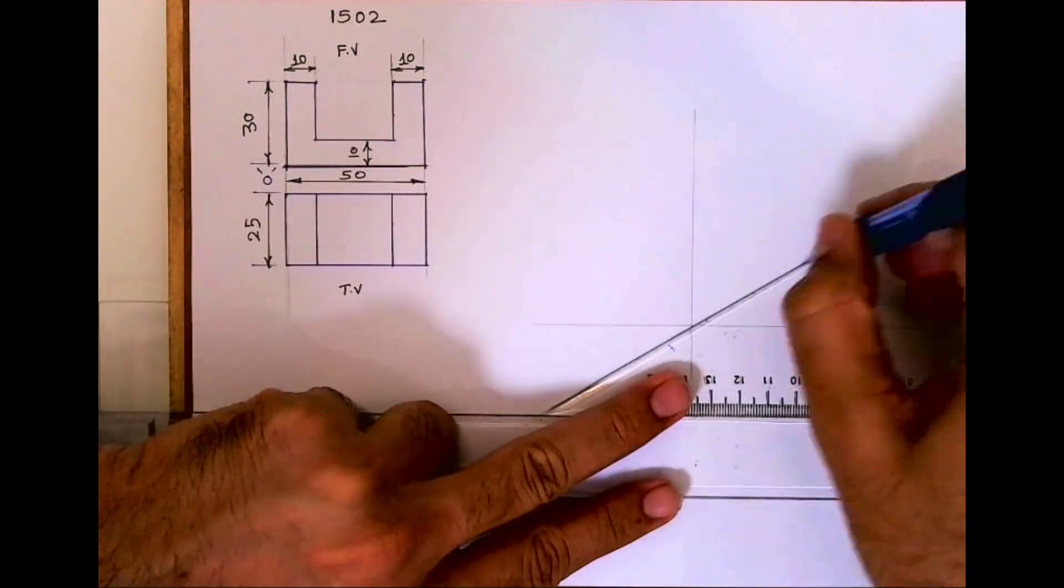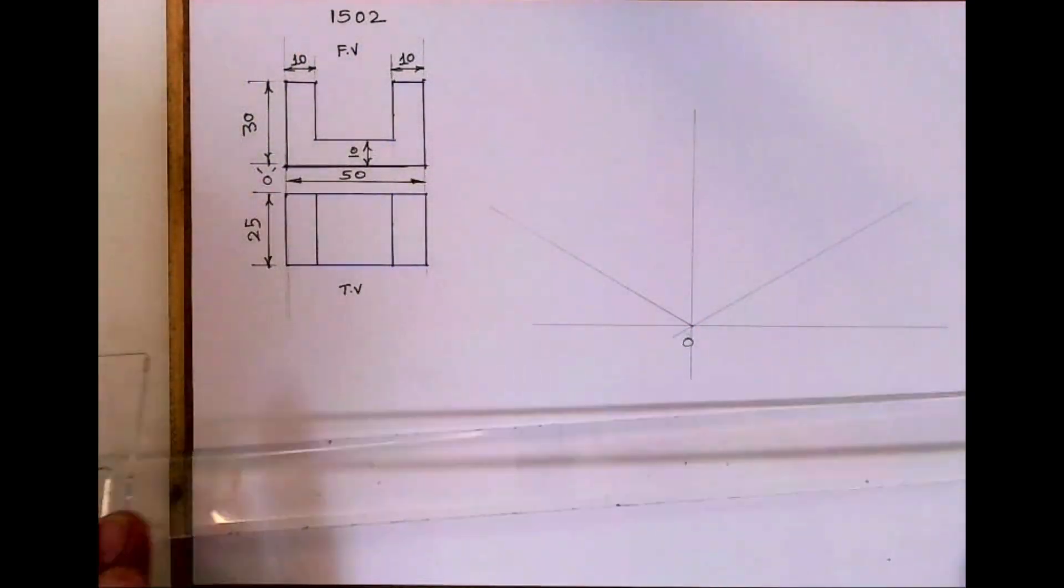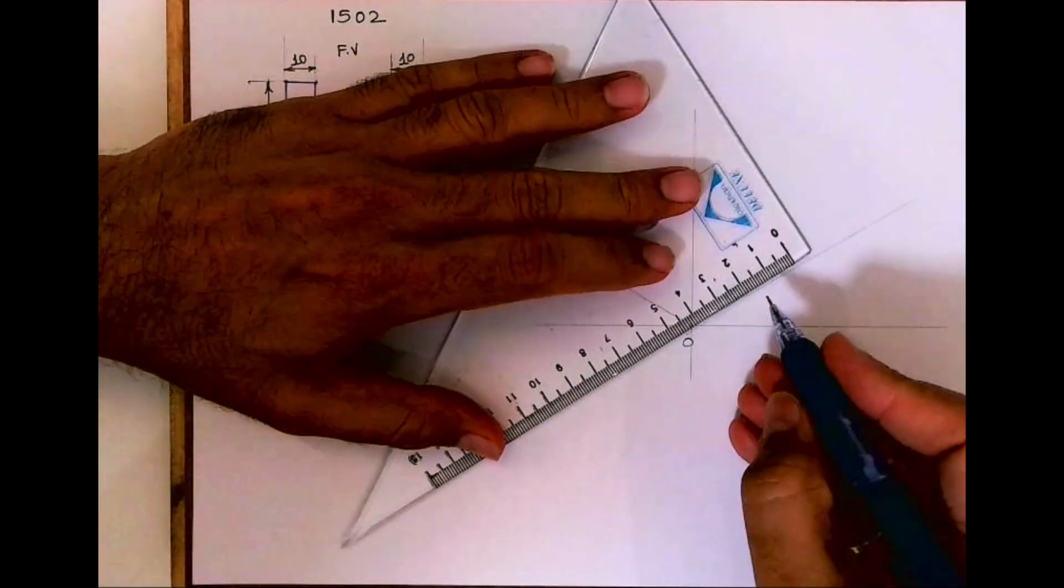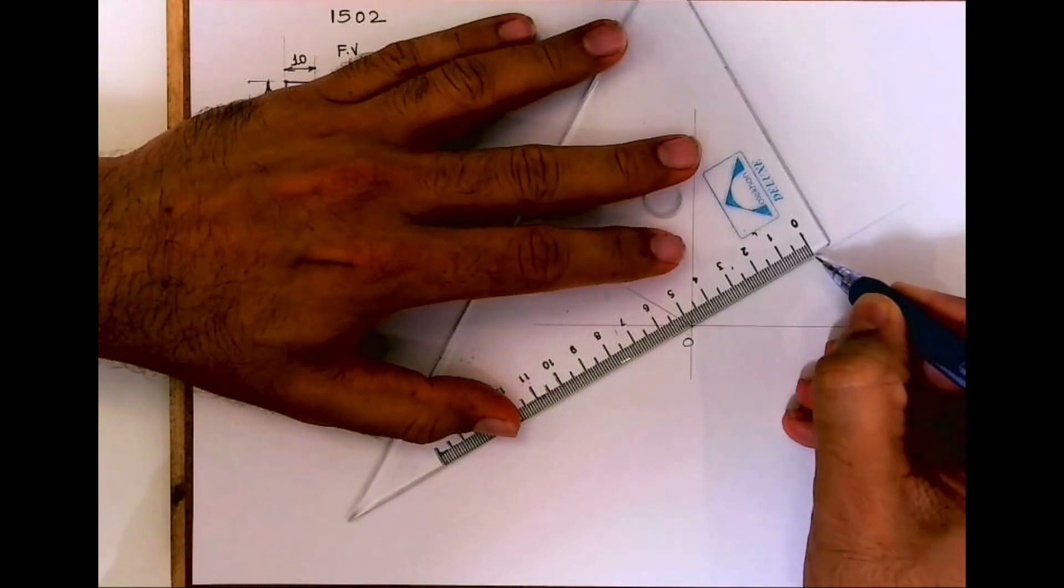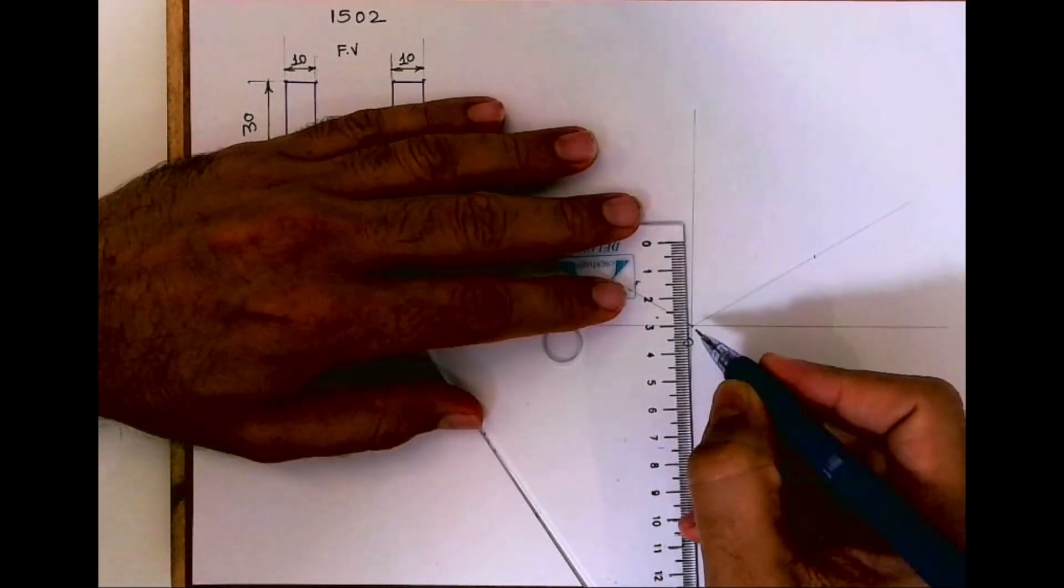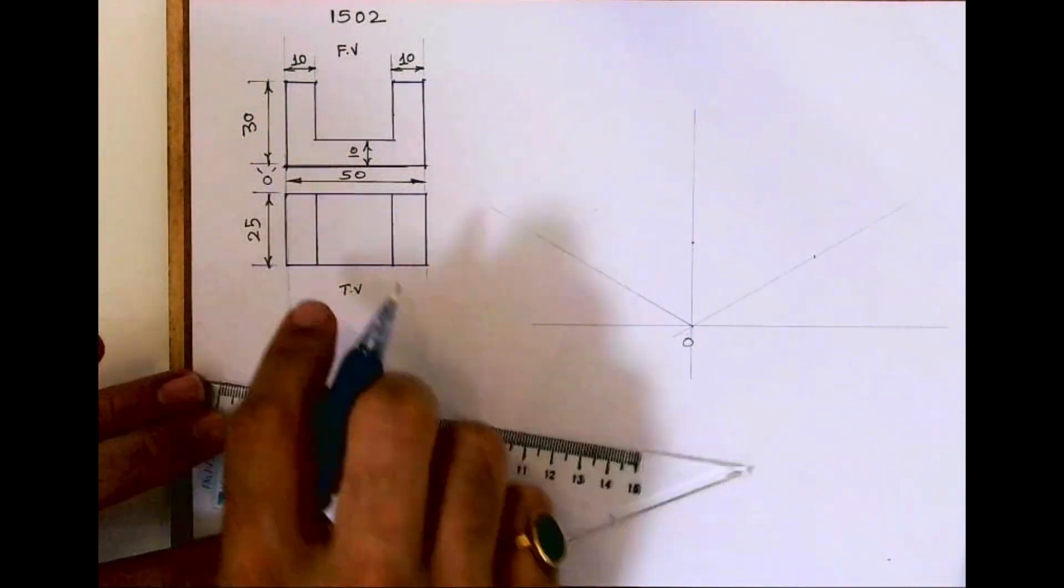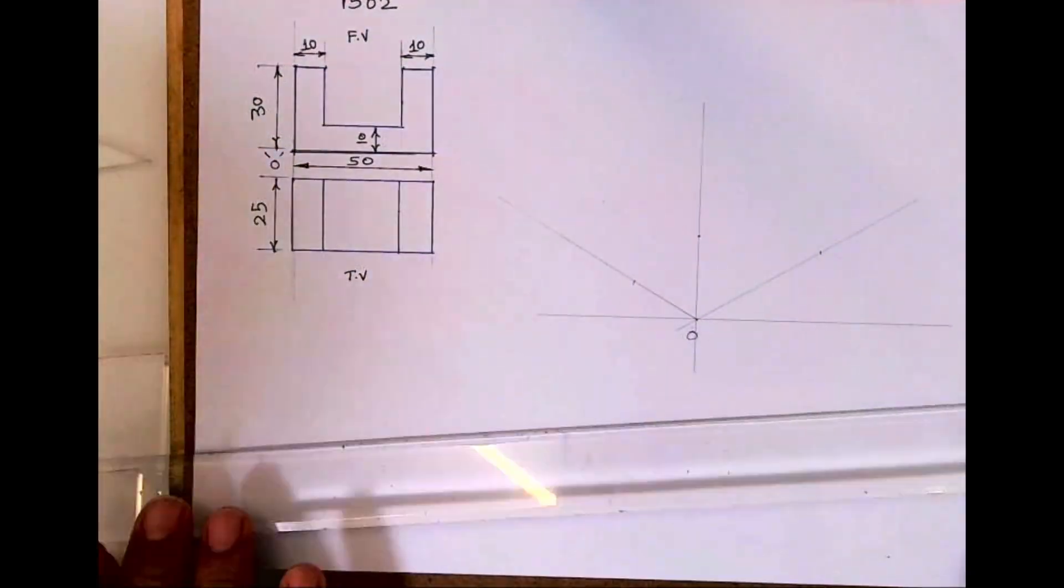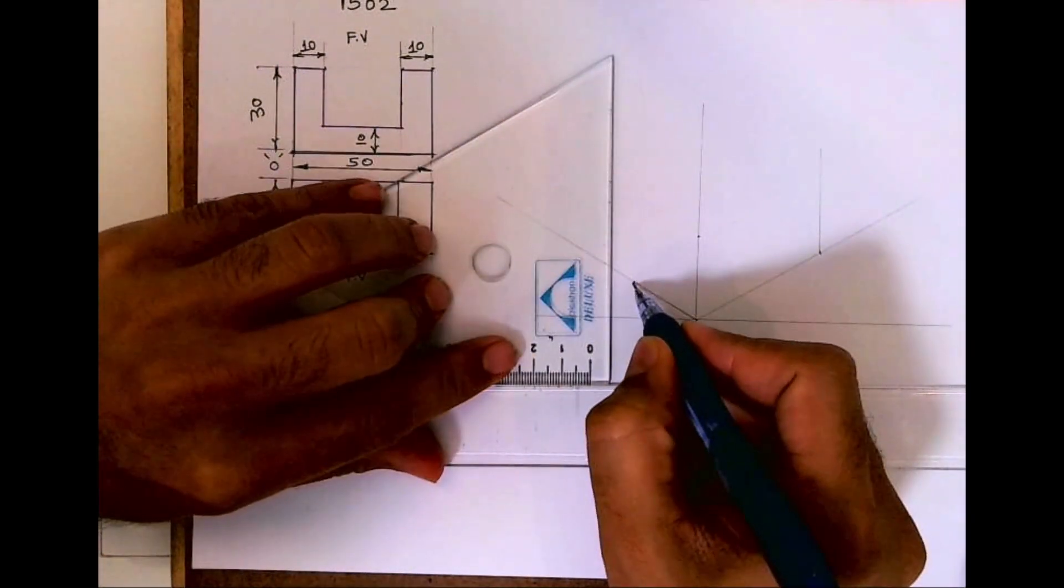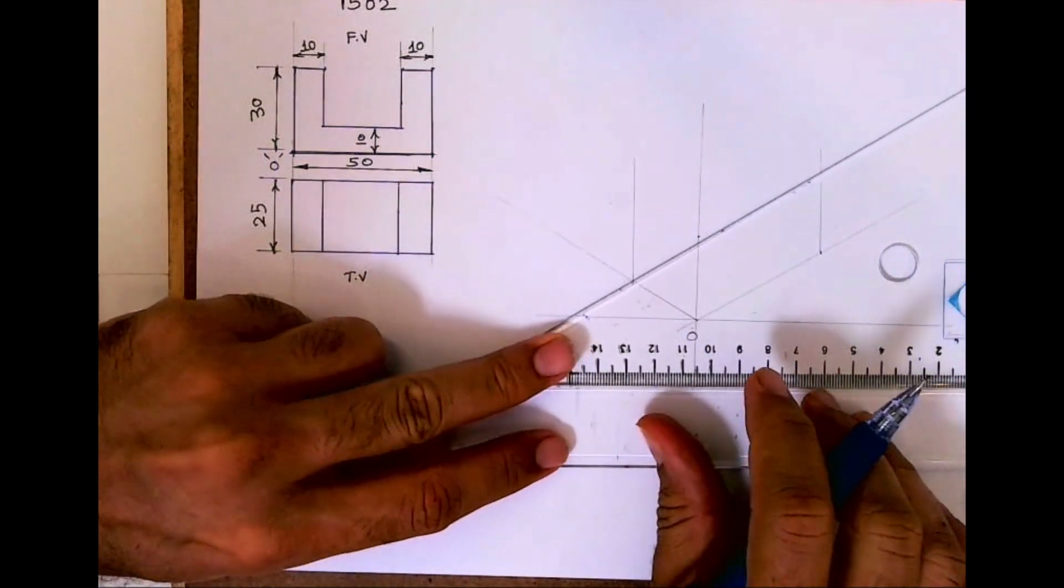Now how much is the length? 50. So we'll mark 50mm on the right side. Height is how much? 30. And width is 25. So you draw vertical line from here as well as here, and you draw 30-degree from here.